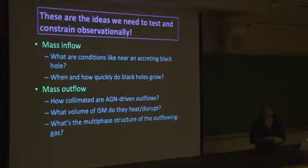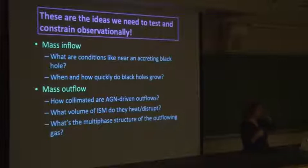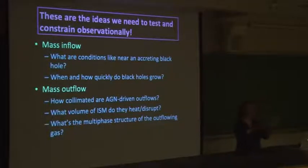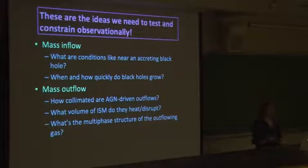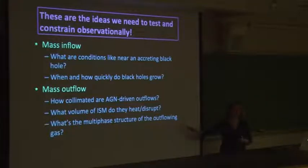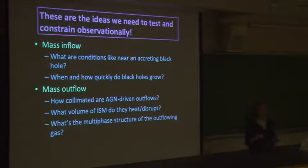The second set of questions have to do with what happens after you have outflowing gas. We want to understand how collimated AGN-driven outflows are — whether they're wide-angle outflows or tiny pencil-beam-type outflows. Do they disrupt or heat how much of the ISM in these galaxies? And we also want to understand the multi-phase structure of the gas. Maybe we're only dumping out really hot gas and all the cool gas gets stuck nearby — but the cool gas is what forms stars, so that's maybe what you care most about.